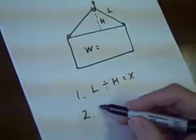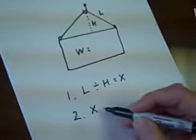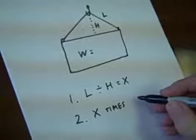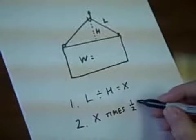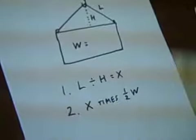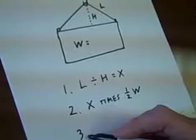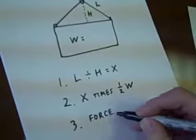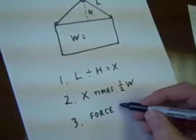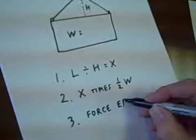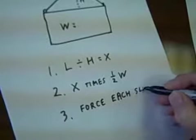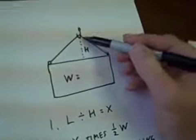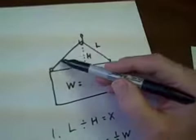Then the second thing we do is take that answer, and just for practical purposes we will call that X, and we will take that answer and multiply it times half of the weight. The answer to that is how much force is exerted on each of these sling legs. That means there's that amount of force on this sling as well as that same amount of force on this sling.